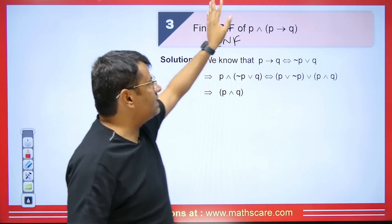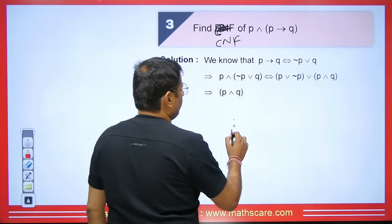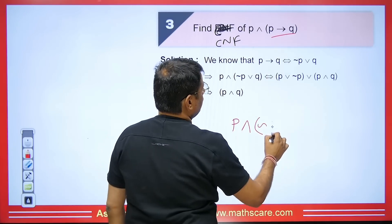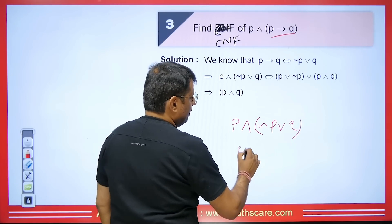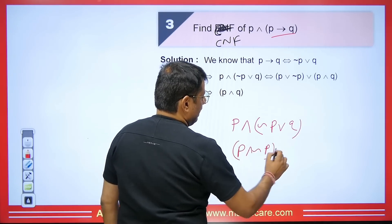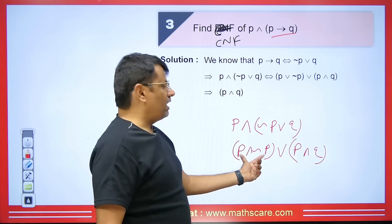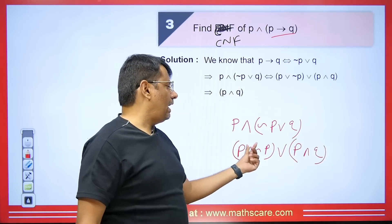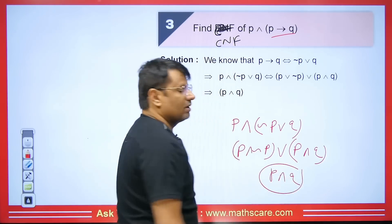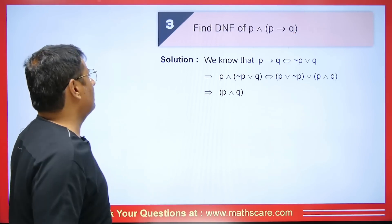This question asks what is its CNF, i.e., the conjunction normal form. We have P, and whenever we remove implies, negation of P OR Q comes. When this goes inside, we get P AND negation P OR with OR, then P AND Q. Since we have P AND negation P, that value becomes 1. So this will be its CNF value.